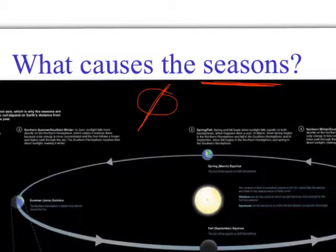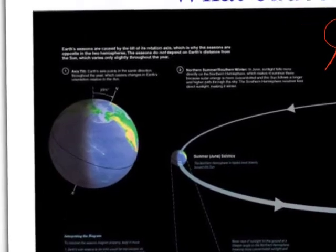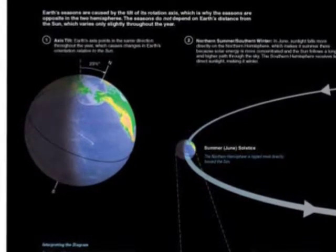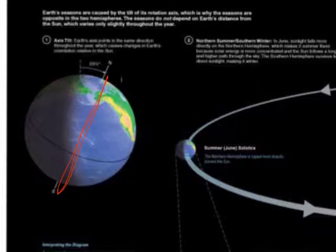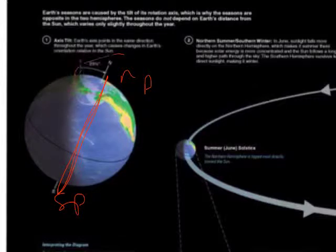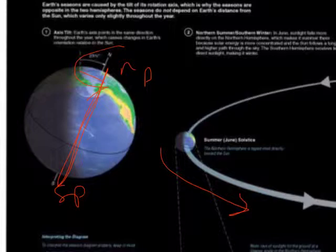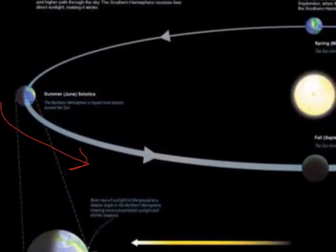Here's a figure from your textbook. We can see the Earth's tilted axis of rotation — there's the north pole and the south pole. Looking down at the north pole, the Earth is spinning counterclockwise, and it is also orbiting the sun counterclockwise. Notice how the tilt is maintained as the Earth orbits the sun.